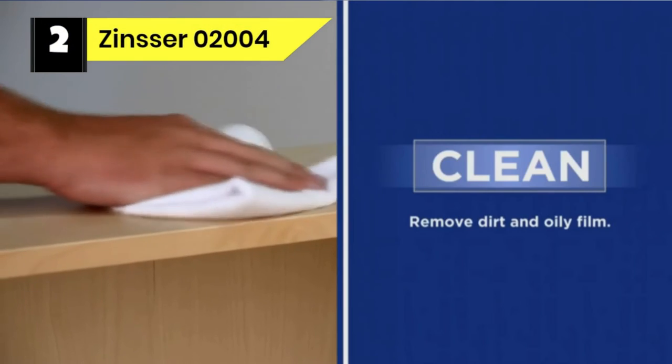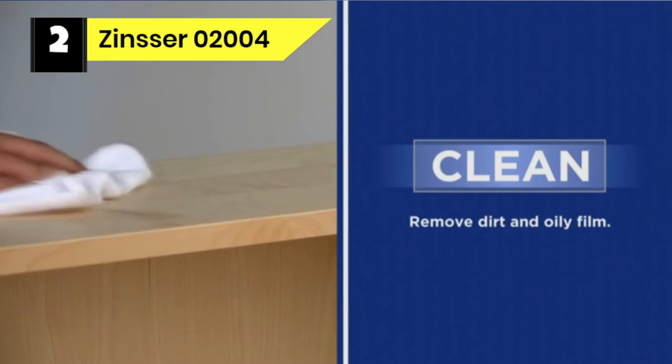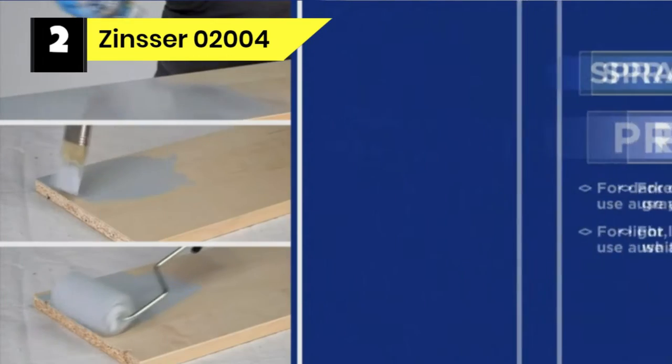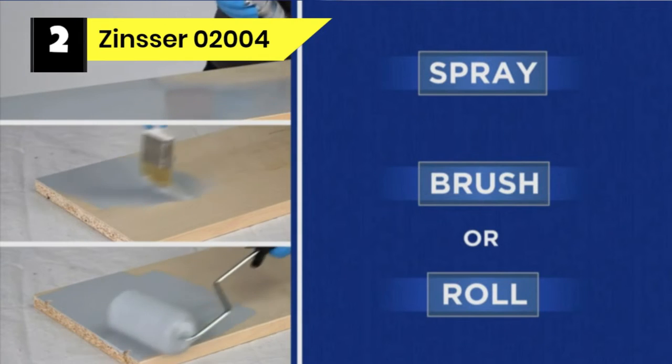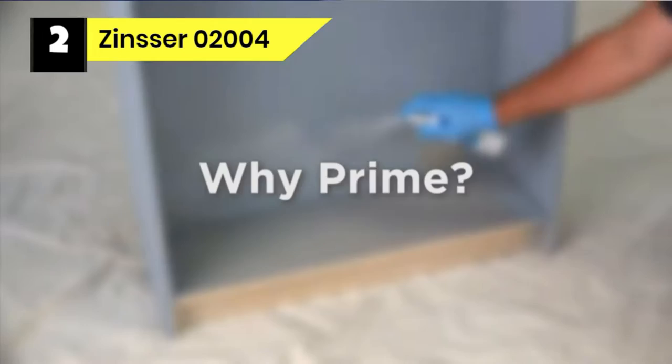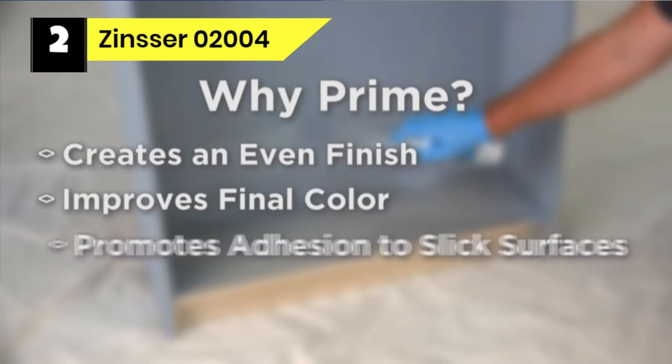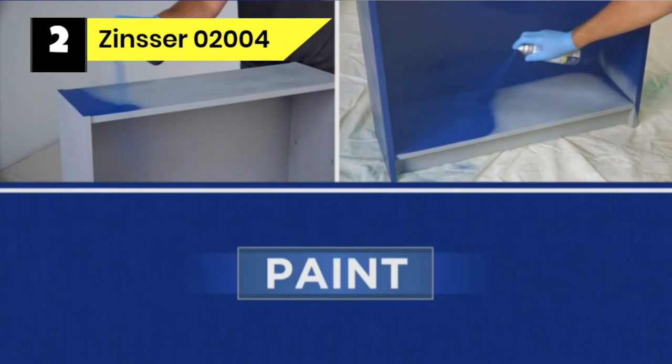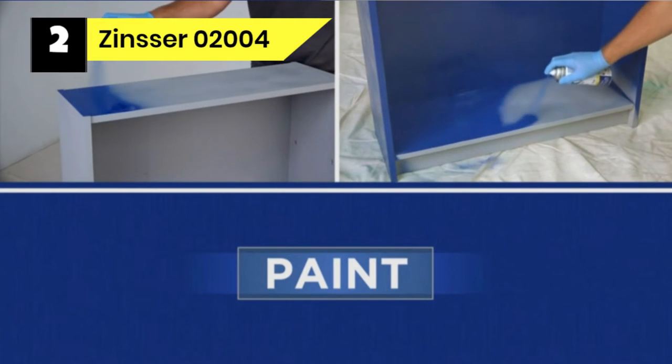Number 2: Zinsser 02004 Exterior Primer Paint. Compared to the KILZ Premium High Hide Primer, which is on the high-range price side, this exterior primer is more affordable. With that in mind, even if the price is low, it does not lack in terms of quality. Meant for both interior and exterior use, this product is highly versatile.